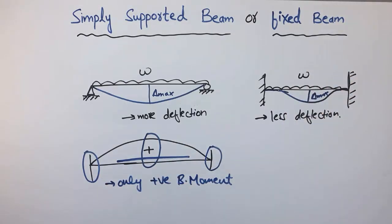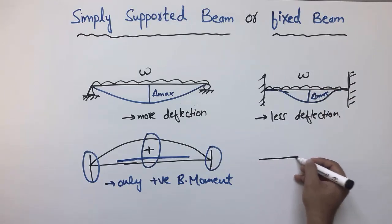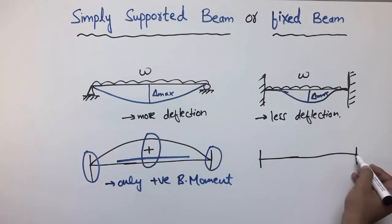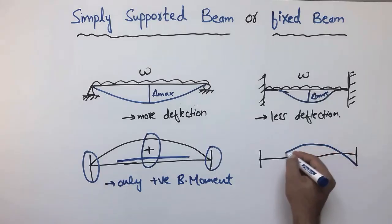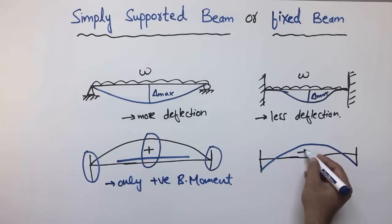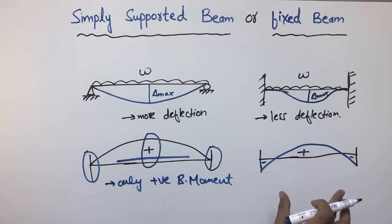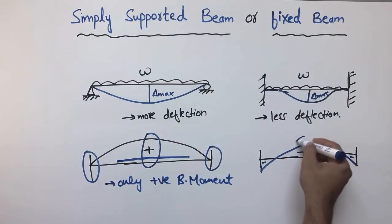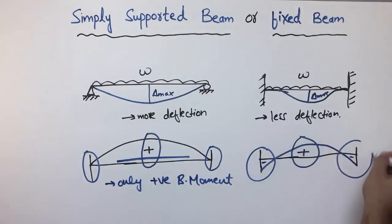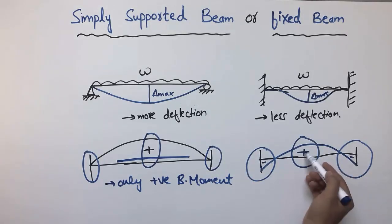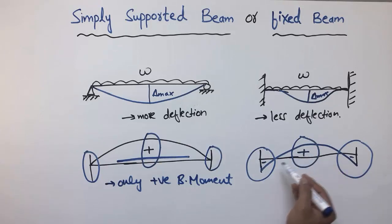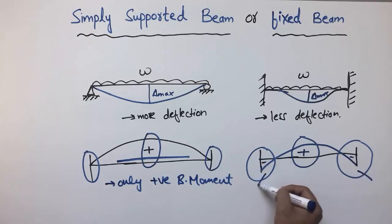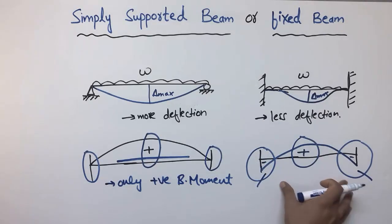Now if we consider the fixed beam and draw its bending moment diagram, the bending moment starts from negative at the supports at both ends, then becomes positive at the middle. So we have two different bending moments — one is a positive bending moment acting at the middle of the beam, and one is a negative bending moment acting at the two ends. This means we must provide two sets of reinforcement: positive reinforcement at the middle and negative reinforcement at the two ends.